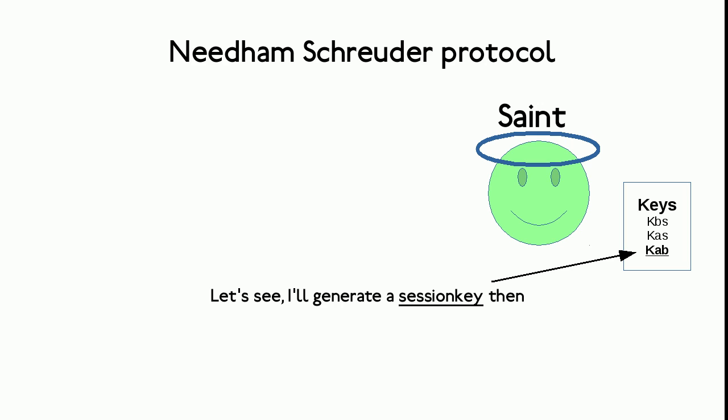The Saint receives Ali's plain text message. He has no way of knowing that the party that sent the message is really Ali, but simply assumes it is. The Saint now generates a session key. This key will be used to encrypt the conversation between Ali and Bertha. The protocol is all about getting this session key to both Bertha and Ali in a secure way.